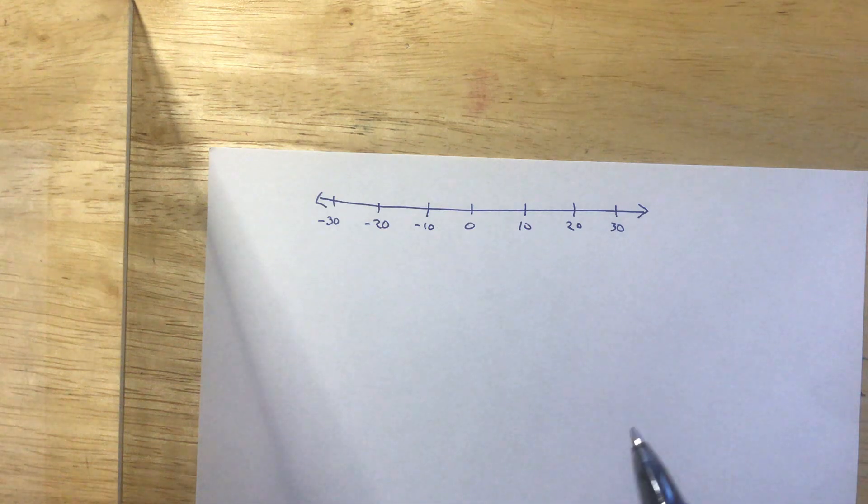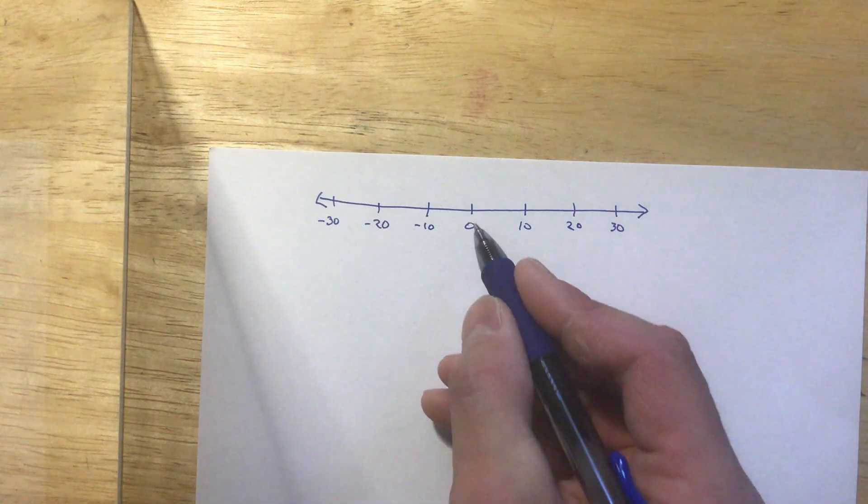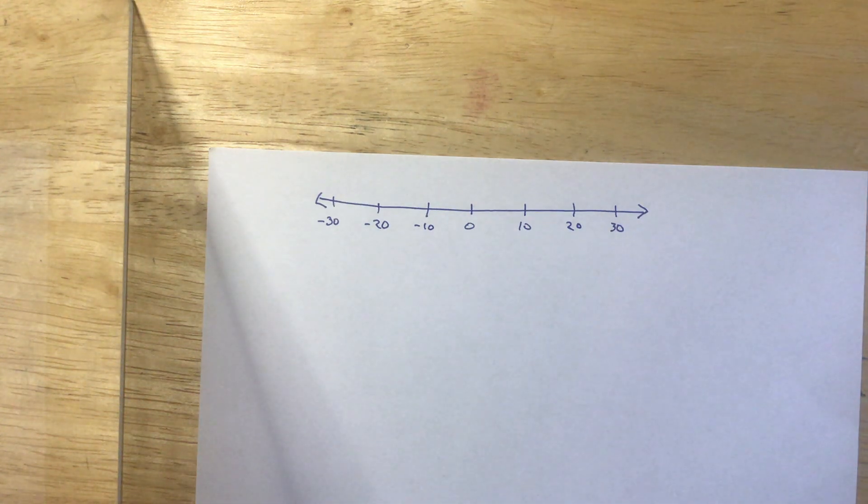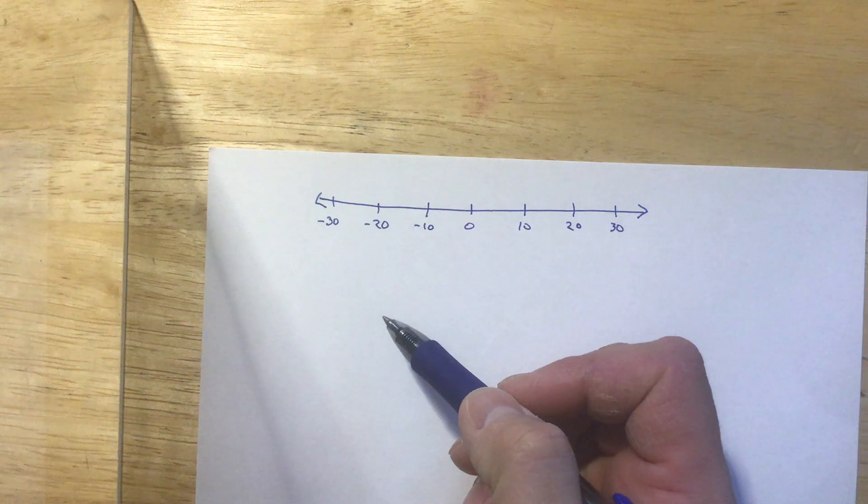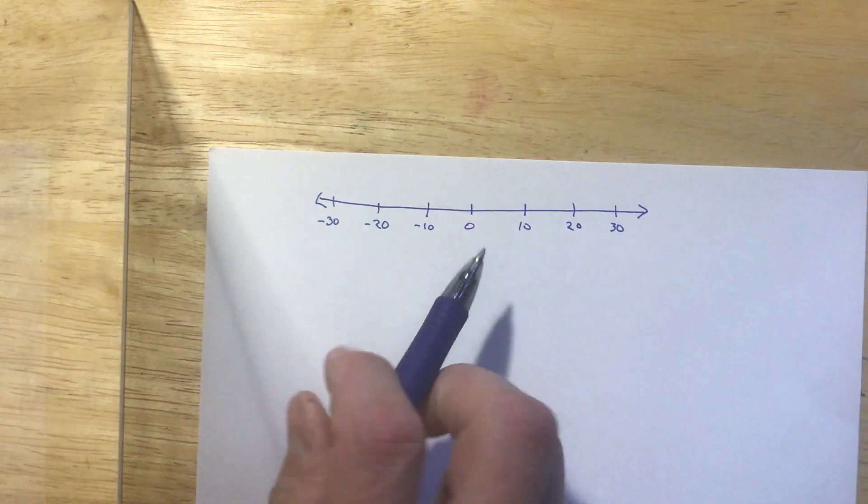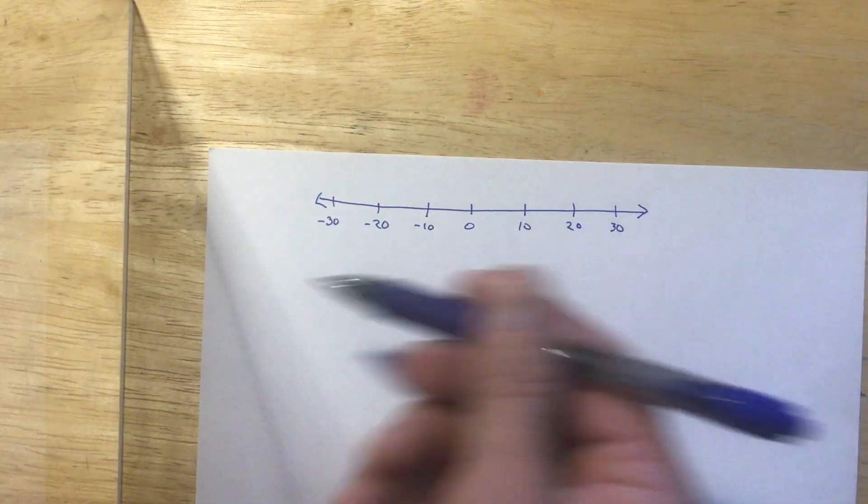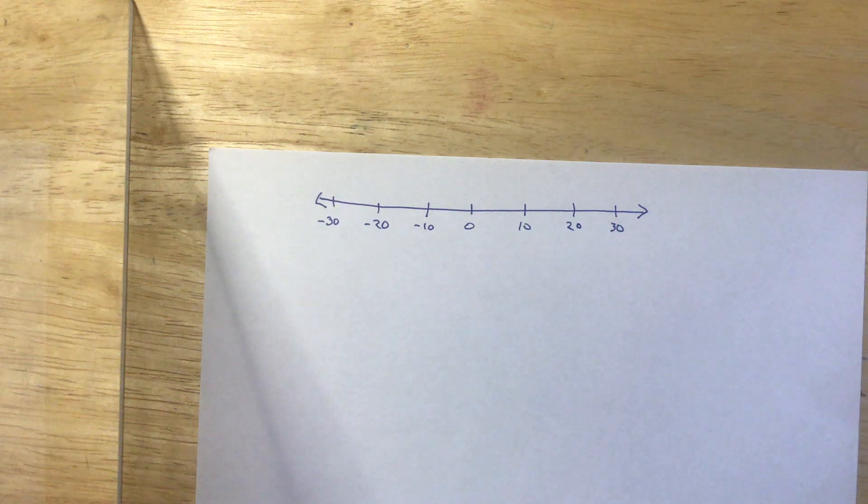Money is another good example when we're talking about negatives. You can have no money, but worse than that, you can owe somebody money. You could have like $10 that you owe your brother or sister or something like that. So numbers can go in a positive direction, but they can also go in a negative direction.